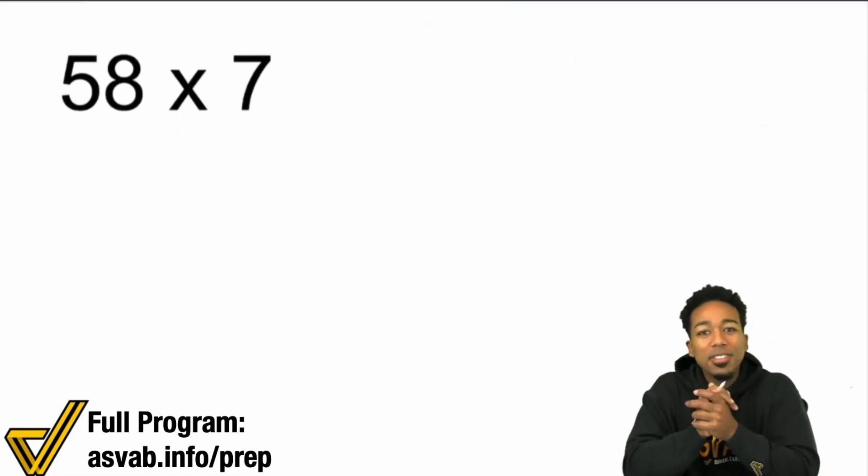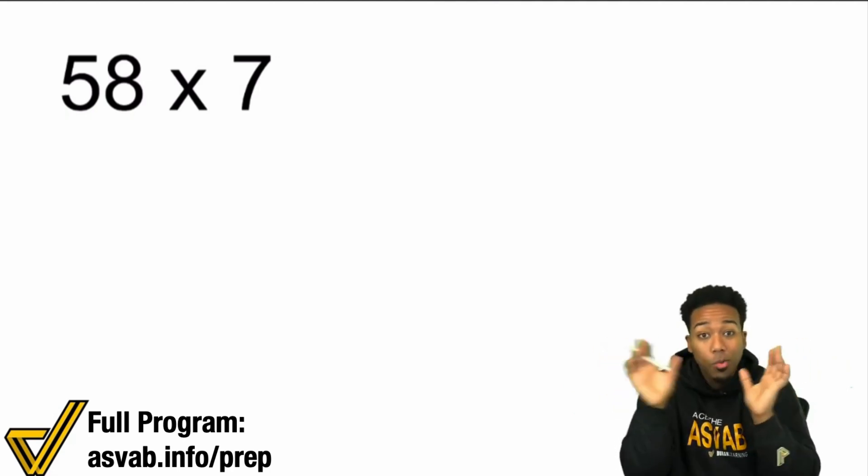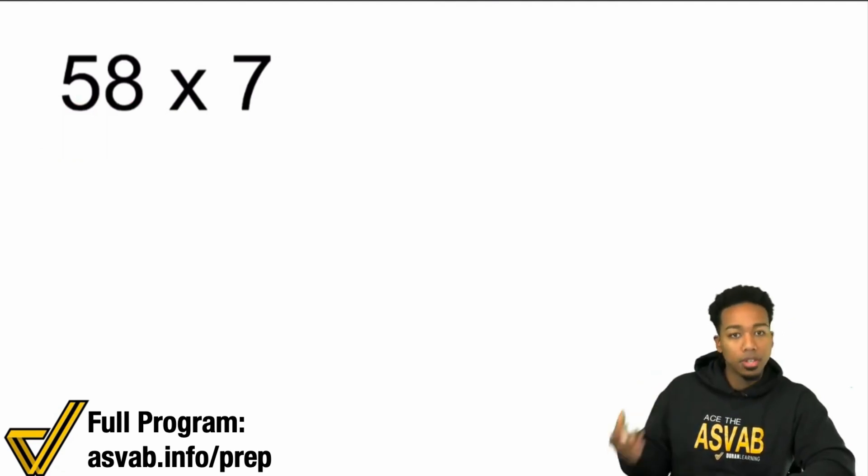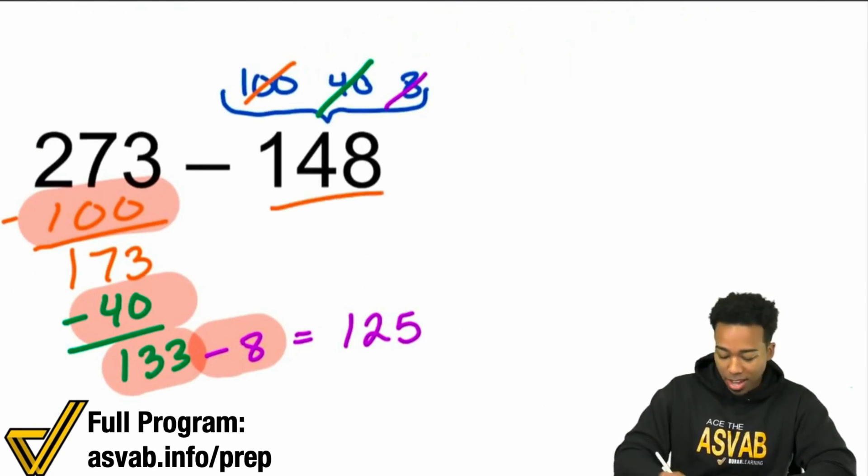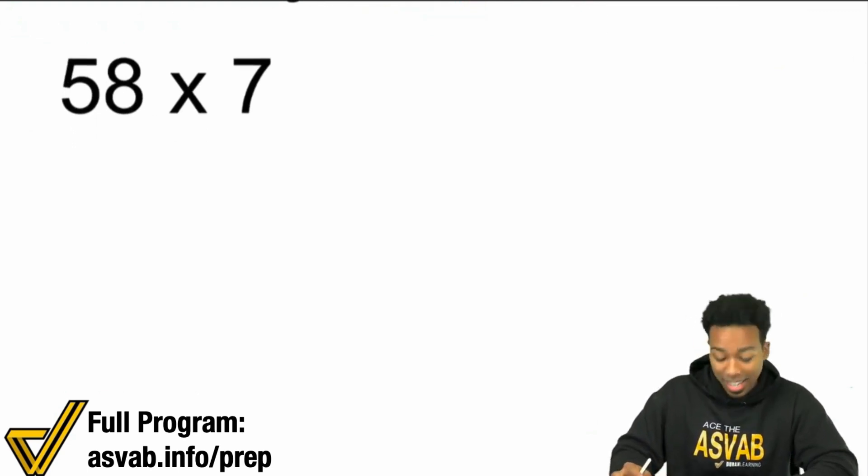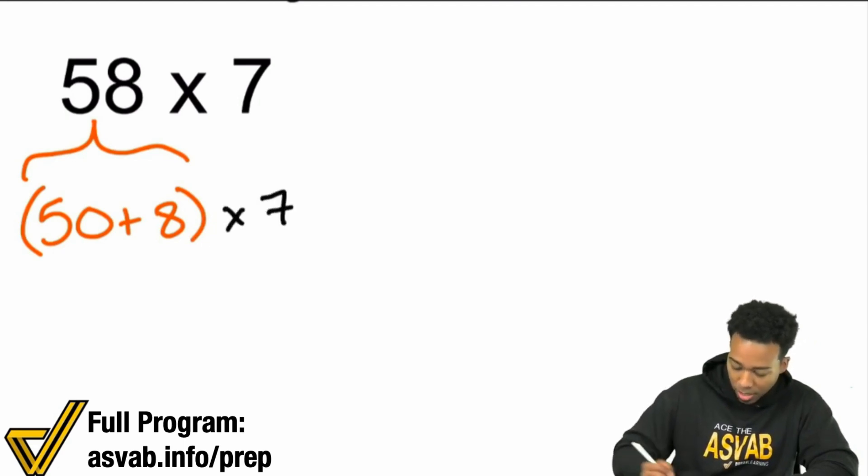So here we go. 58 times 7. So remember how I just talked about splitting and gluing? So splitting glue works for multiplication as well and division. It works for addition, subtraction, all of it. It works for all of it. And again, splitting and gluing is all about splitting the number up into easier operations. So splitting a big number into easier numbers. And what did I do last time? Look at that. Check out the pattern here. 148, I turned it into 140 and 8. I split it into the digits. So check out over here. I'm going to split the 58 times 7 into the digits. I'm going to split the 58 into 50 and 8.